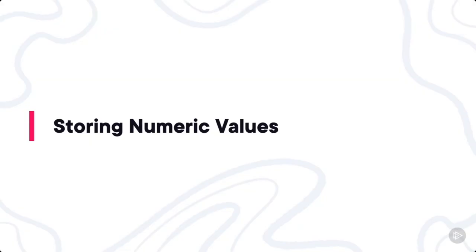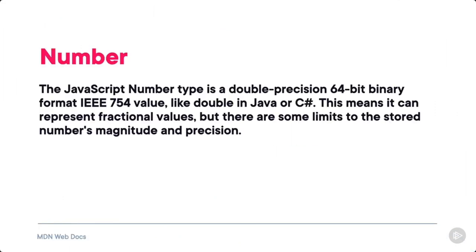Now we're going to talk about how we store numeric values within our JavaScript code, covering not one but two different data types. To start, we'll be talking about the number type. The JavaScript number type is a double-precision 64-bit binary format IEEE 754 value, like double in Java or C#. What I really want you to notice is that this means it can represent fractional values, but there are some limits to the stored number's magnitude and precision — meaning there's a limit to how big or how small a number can be stored inside the number type.